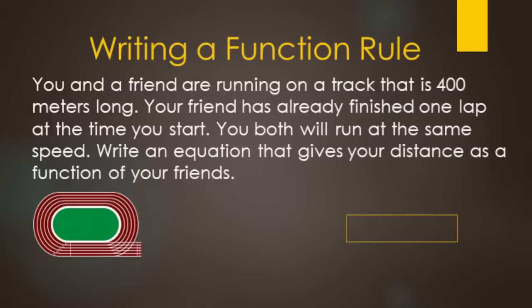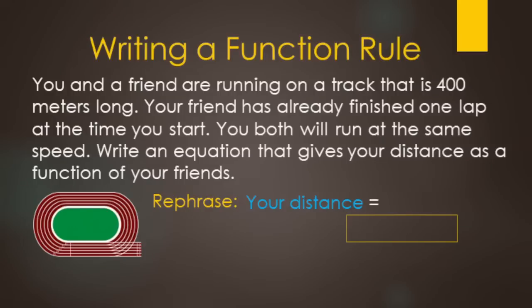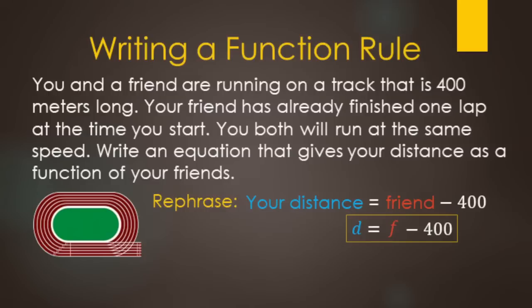When we have several sentences, rephrasing and boiling it down to the important parts helps us write our equations. To rephrase: your distance will be one less lap than your friend's, or 400 meters less. To find your distance, take however much your friend ran and subtract 400 from it. For writing the equation, pick a variable for your distance — call it d — then set it equal to your friend's distance f, minus 400.